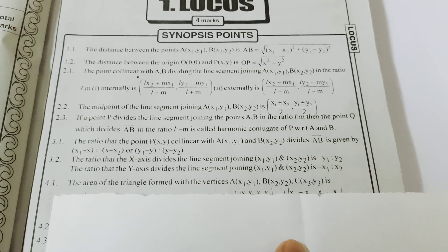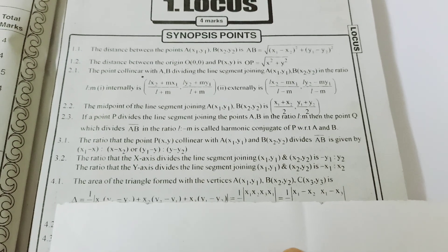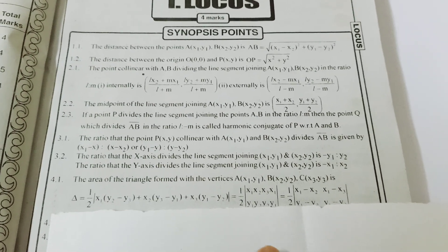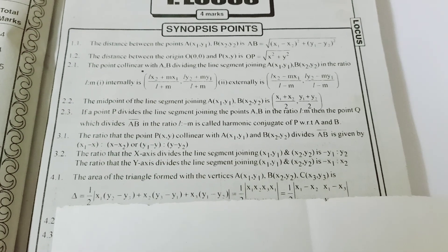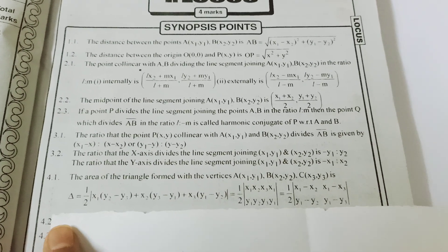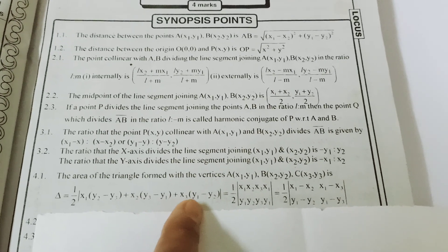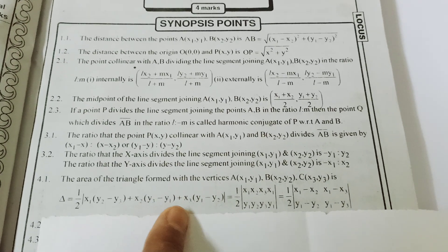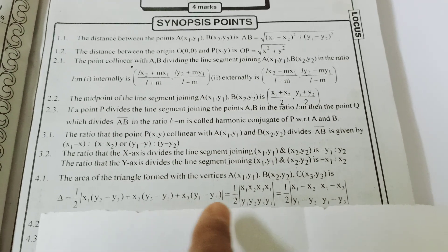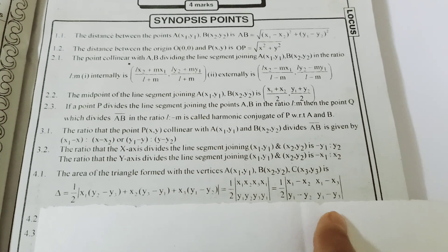Next, area of the triangle: half of [x1(y2 minus y3) plus x2(y3 minus y1) plus x3(y1 minus y2)]. This is the area of triangle formula. We will do all of these formulas.